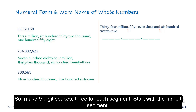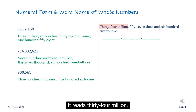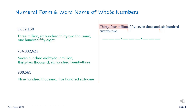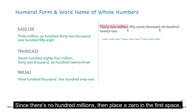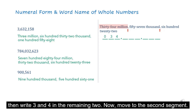Three spaces for each segment. Start with the far left segment — it reads thirty-four million. Since there is no hundred millions digit, place a zero in the first space, then write 3 and 4 in the remaining two.